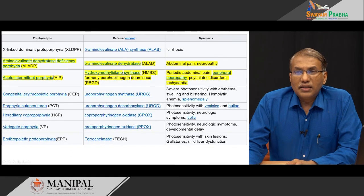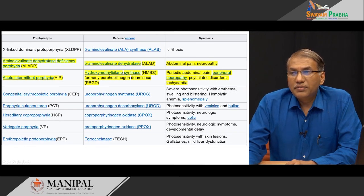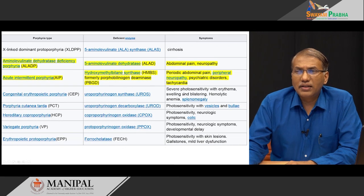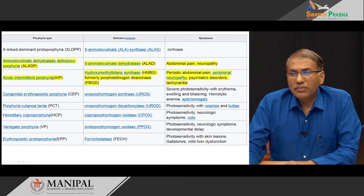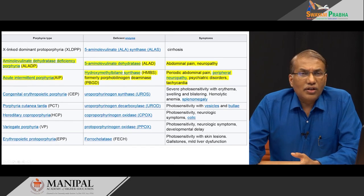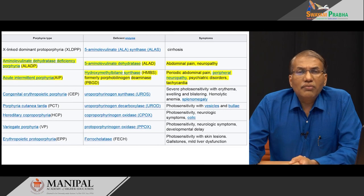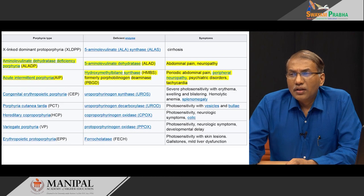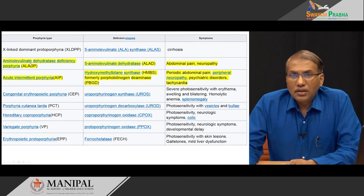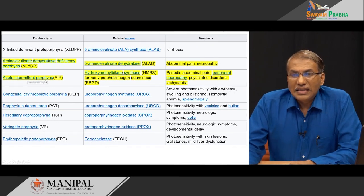Looking at this table, you can see that the symptoms of porphyrias are very vague. Most of them have symptoms like psychological manifestations, visceral pain, abdominal pain, or neurological manifestations. Any blood test, X-ray, or scan will not show any positive report. The first three — X-linked dominant protoporphyria, ALA dehydratase deficiency porphyria, and acute intermittent porphyria — will not have any photosensitive or cutaneous manifestations.